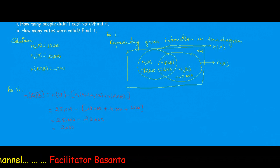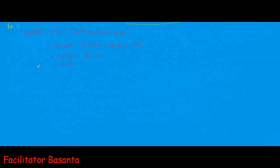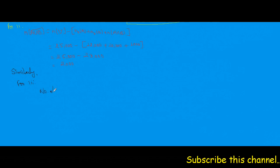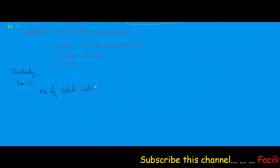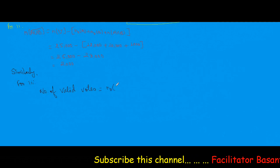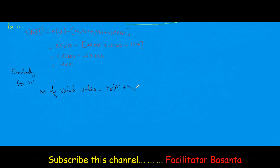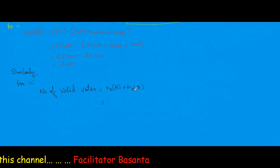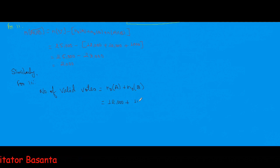For the third part, how many votes were valid? The number of valid votes equals the number of votes obtained by A plus the number of votes obtained by B, which means only A plus only B. Only A is 12,000 and only B is 10,000, so valid votes equal 22,000.